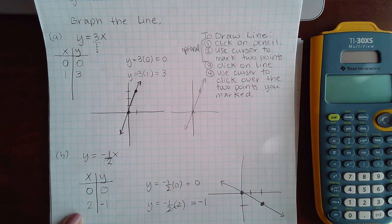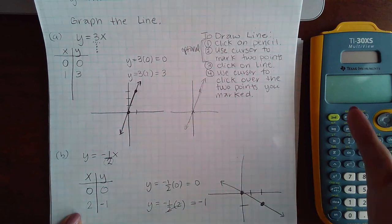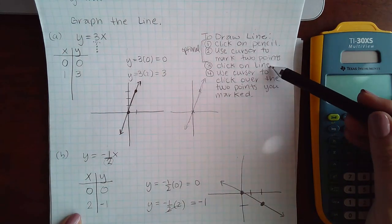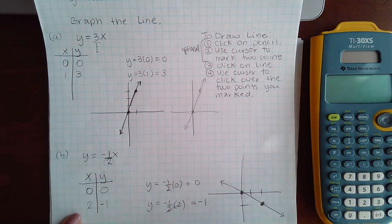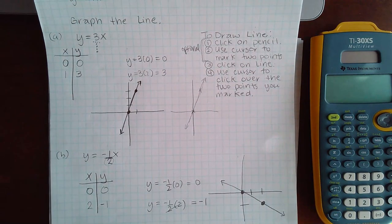That's on paper. In ALEKS, you draw the line, or you click on the line icon, mark zero zero, mark two negative one, and it automatically makes the line for you, and then you can submit.